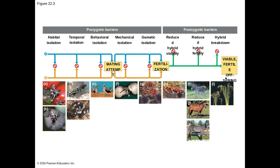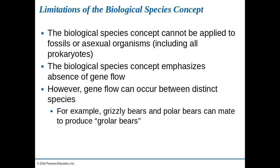There are some limitations to the biological species concept. First, we cannot apply it to fossils because we don't know who those organisms could mate with. We also can't really apply it to asexual organisms like prokaryotes that divide asexually and only need themselves. Additionally, it emphasizes the absence of gene flow, assuming organisms couldn't move and bring new genes into a gene pool to change organisms over time.